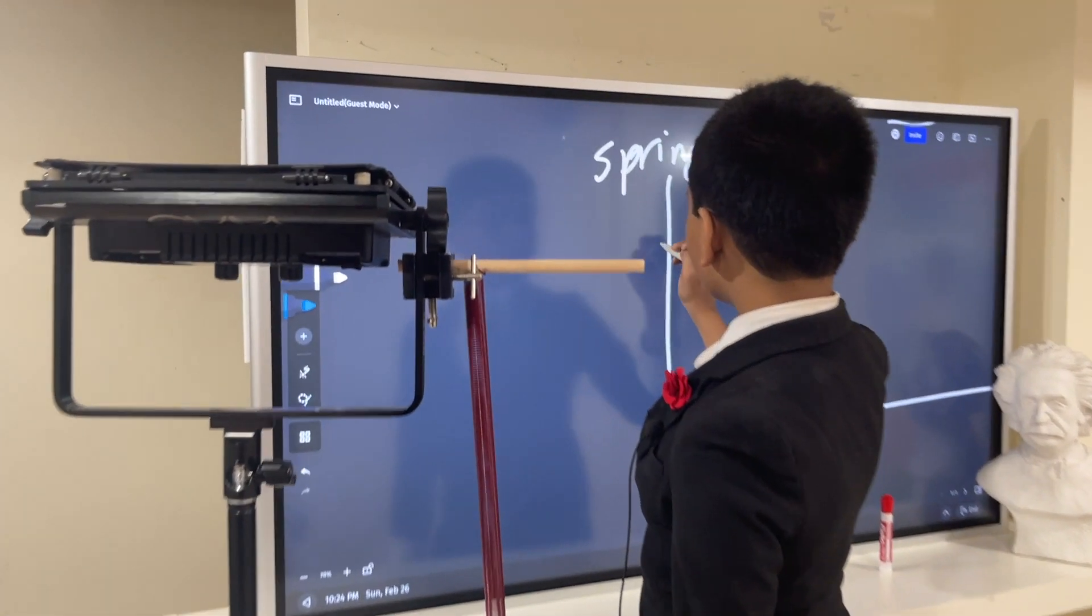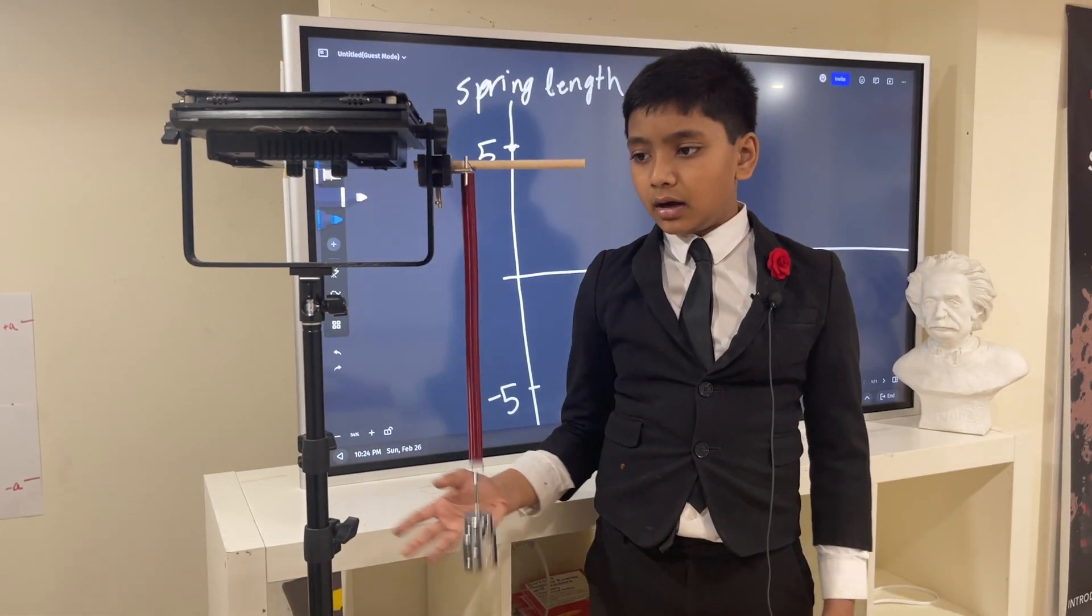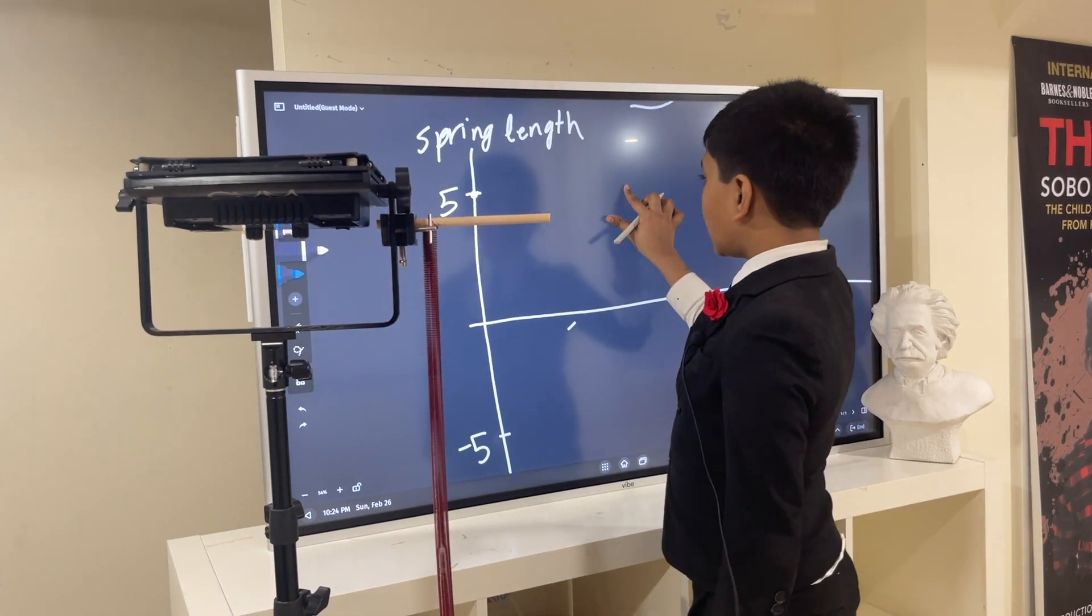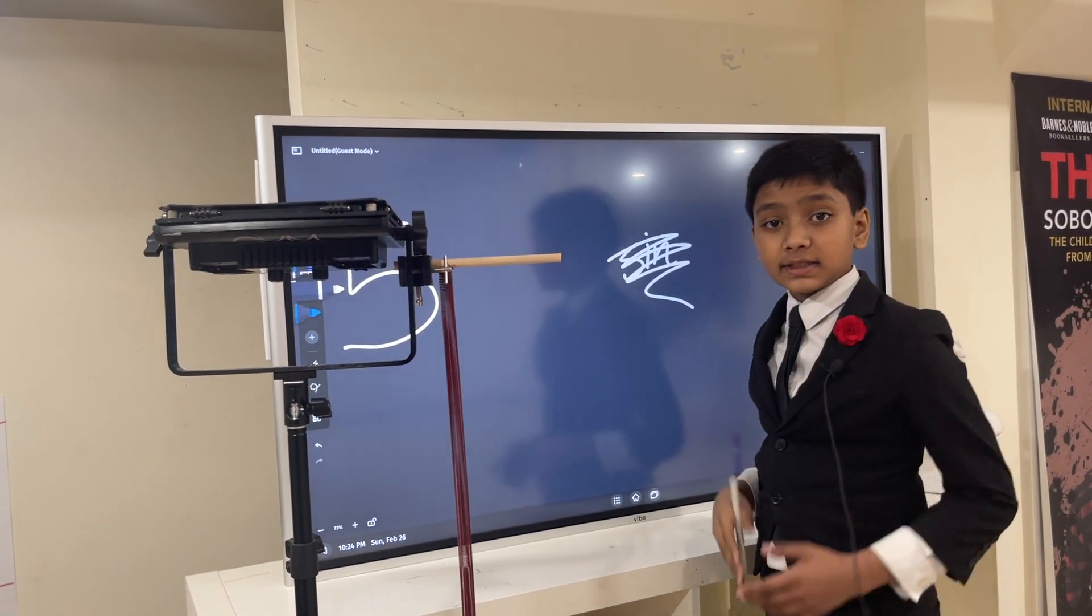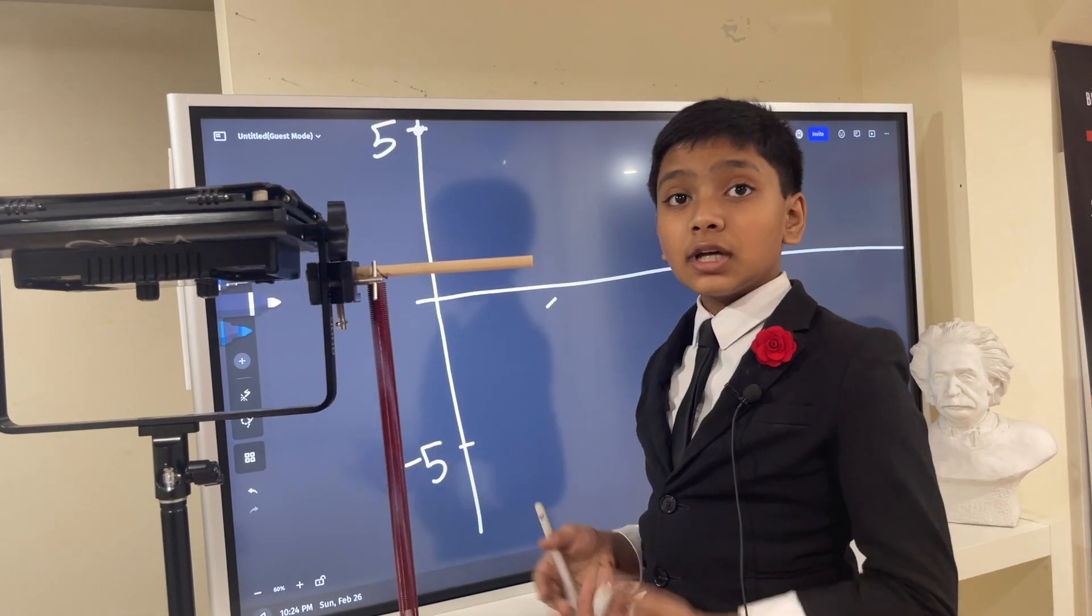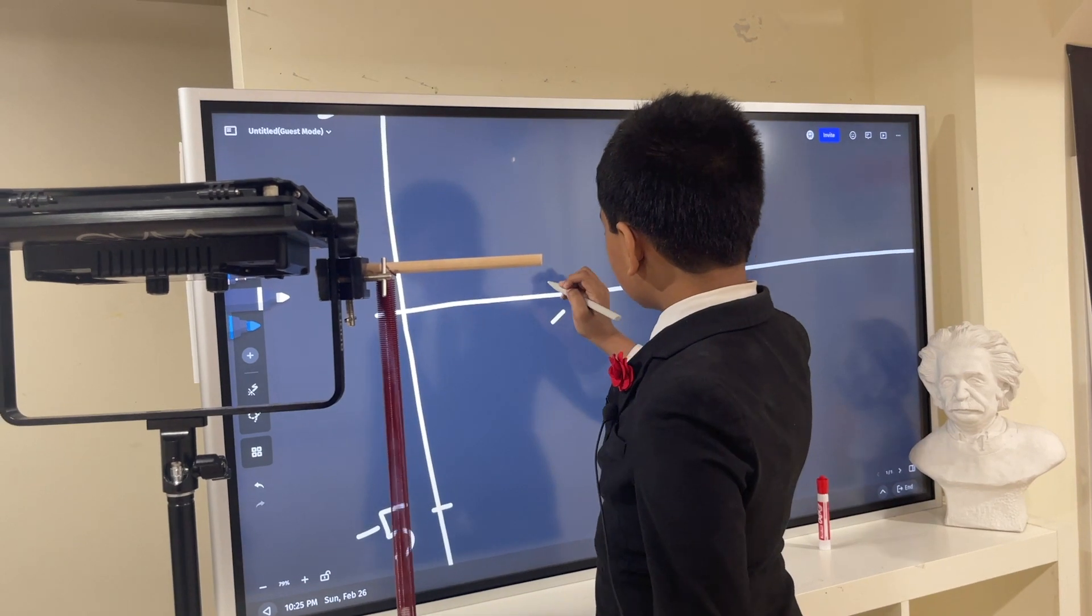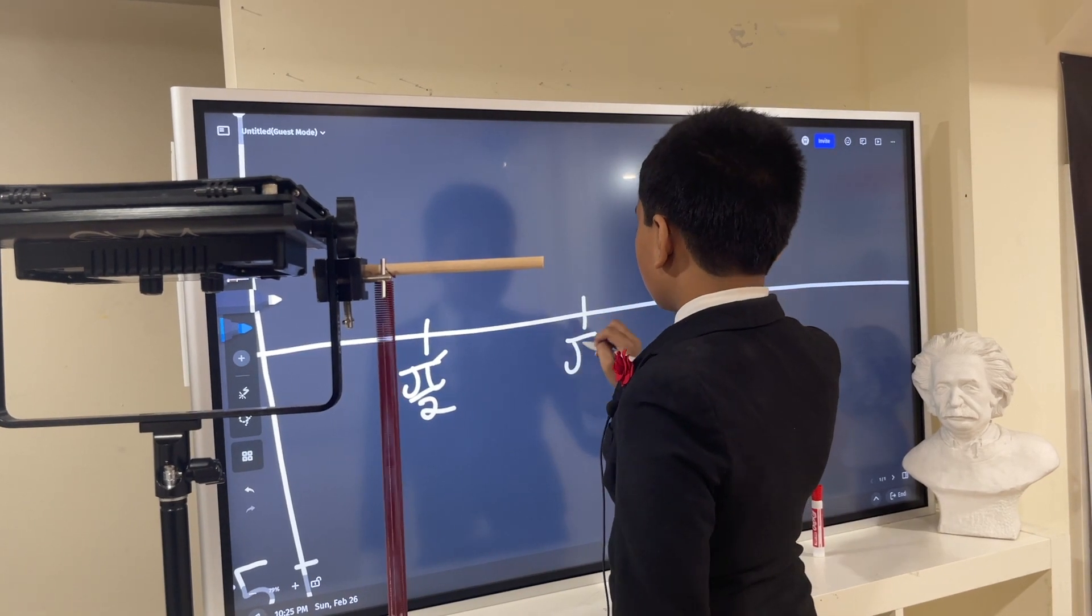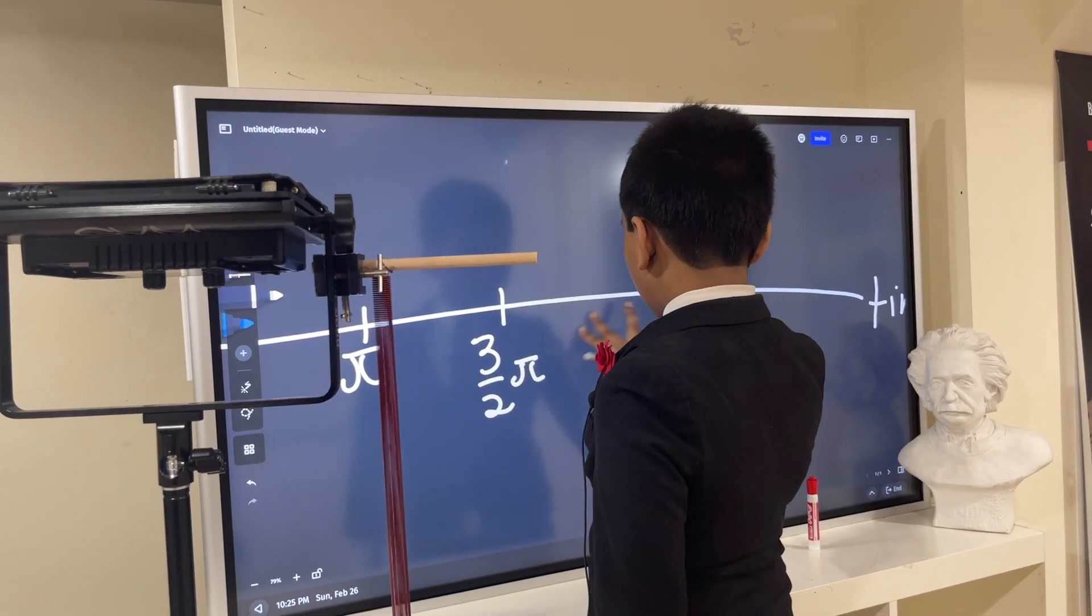So that maximum height would be five, and of course the minimum height. The oscillations of this spring aren't exactly two pi or something like that, but we can use a sinusoidal function to model this. To keep it simple, we're going to use the regular values of pi over two, pi, three pi over two, and two pi.